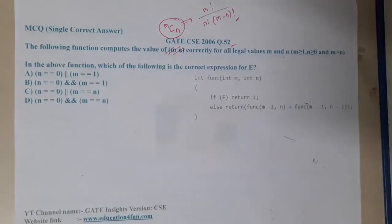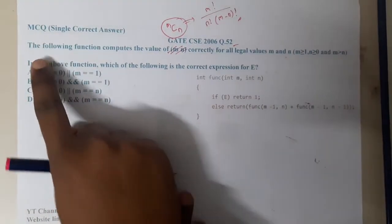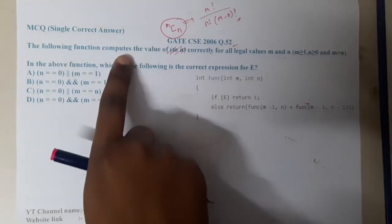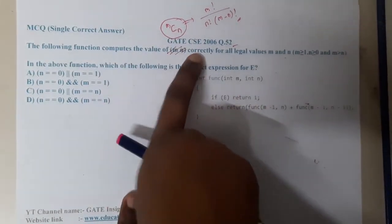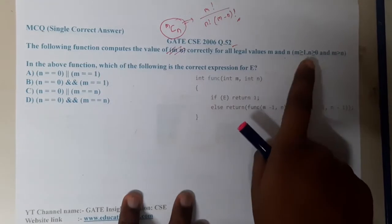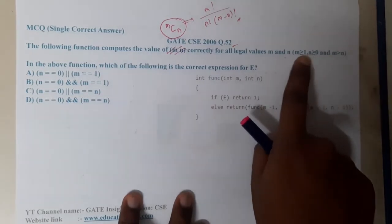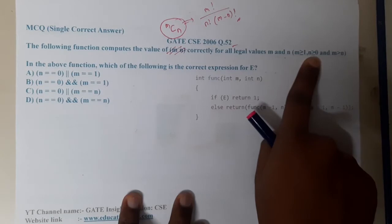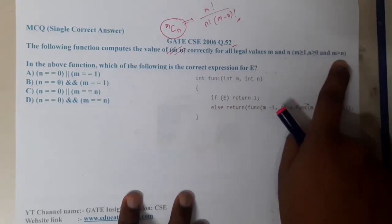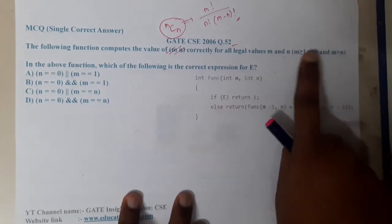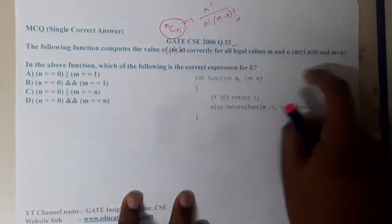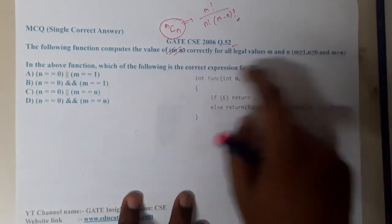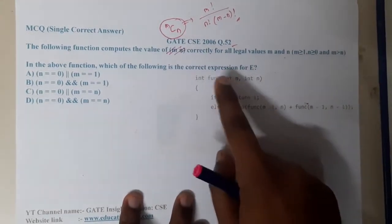To solve this particular code, you need to know that formula. The question asks: the following function computes the value of mCn correctly for all legal values where m ≥ 1, n ≥ 1, and m > n. With these conditions satisfied, this is the code to find the combination.